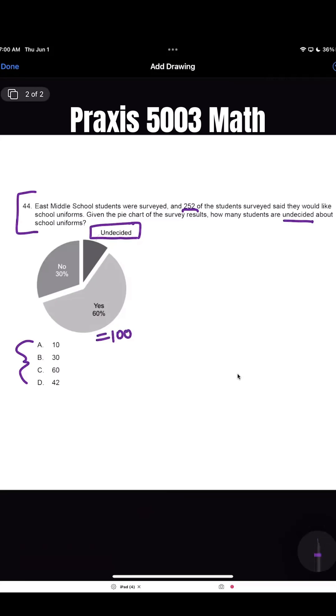A pie chart equals 100%. We also know that the kids who want uniforms, that's 252 students, and that is 60% of the total. The undecided kids make up 10%. So I'm going to set up a proportion: part over total equals part over total.